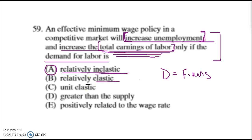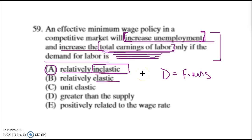They're going to hire fewer, but they're going to continue to hire them because they're insensitive to a change in price — in other words, they actually need those workers. It's inelastic because the firms still demand those laborers even though they're more expensive; they need them to accomplish the work. So the total earnings of labor are going to go up because while the quantity demanded decreases a little bit, it doesn't decrease so much that the total earnings are a complete loss.